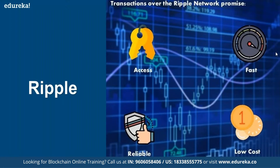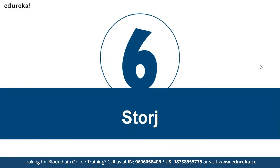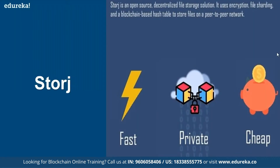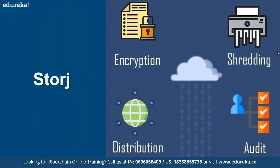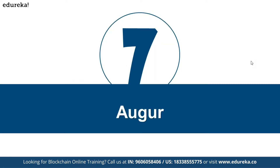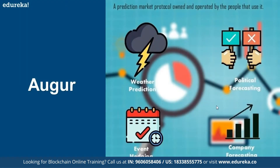Likewise, there are different types of applications. Transactions can be cheaper and made in private, with a faster pace where transactions can be verified very quickly. You can primarily use them as part of your encryption. If you want to shred information that nobody can recollect once shredded, you can use that as well. You'll also have continuous auditing to make sure things are working fine, and it's highly distributed. There are also other concepts like Augur, which can be used for weather prediction, political forecasting, and company forecasting.